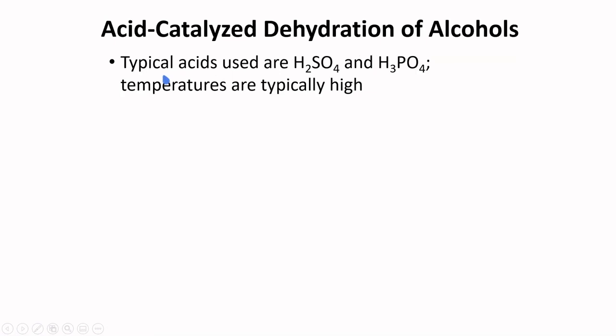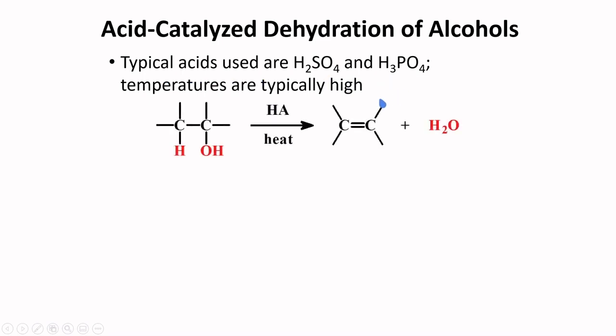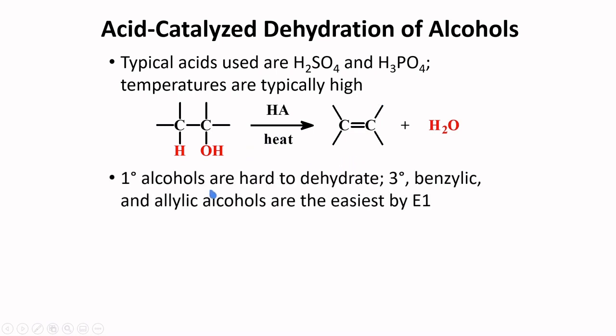Acid-catalyzed dehydration of alcohols is also possible. Typical acids used are sulfuric acid and phosphoric acid, and the temperatures are typically high. The product of dehydration of alcohols is alkenes. Primary alcohols are hard to dehydrate and will require higher temperature. Tertiary, benzylic, and allylic alcohols are the easiest by unimolecular elimination.